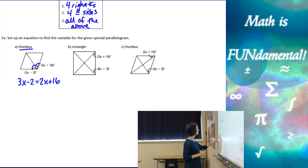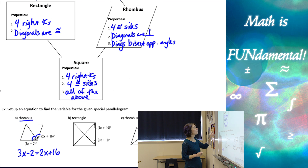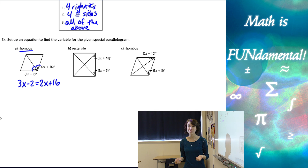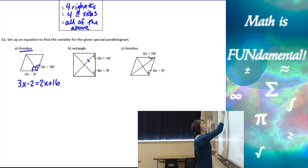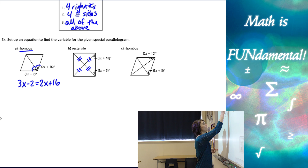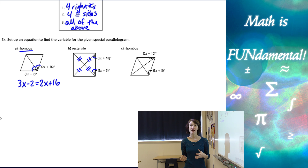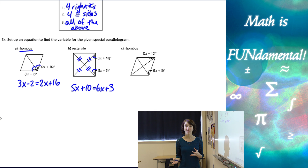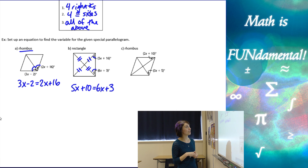The next example is a rectangle — a bit trickier. Rectangles have four right angles, and the diagonals are congruent. Because it's also a parallelogram, the diagonals are bisected, so all diagonal pieces are congruent. Looking at the resulting triangle, those two angles are base angles of an isosceles triangle, so they must be congruent. We set up the equation using the diagonal property and properties of isosceles triangles.